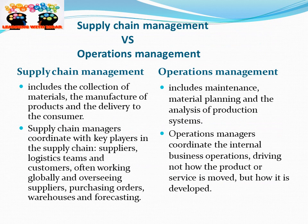Continuing the discussion on Supply Chain Management versus Operations Management: Supply Chain Management involves the collection of materials, manufacture of products, and delivery to the consumer, while Operations Management includes maintenance, material planning, and analysis of production systems. Supply Chain Managers coordinate with suppliers, logistics teams, and customers globally, overseeing purchasing orders, warehouses, and forecasting, whereas Operations Managers coordinate internal business operations — focusing on how a product or service is developed, not moved.